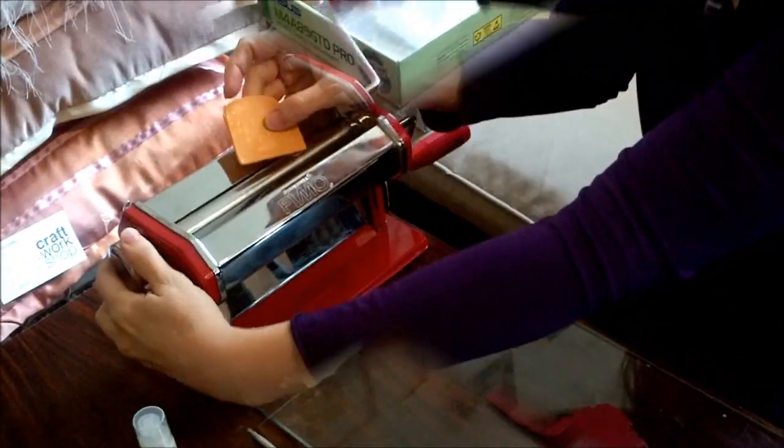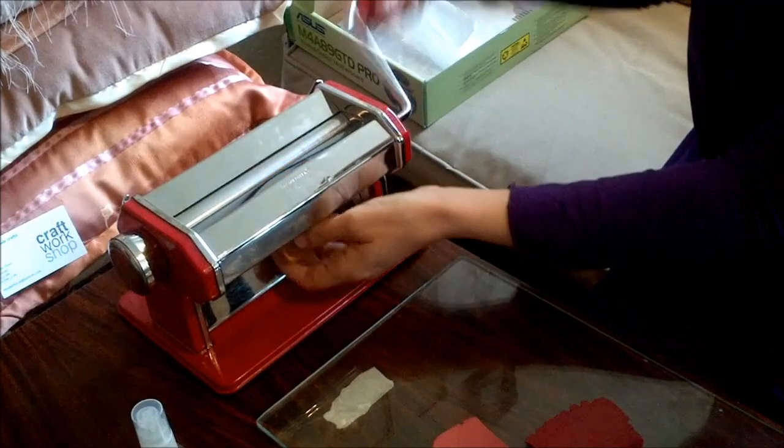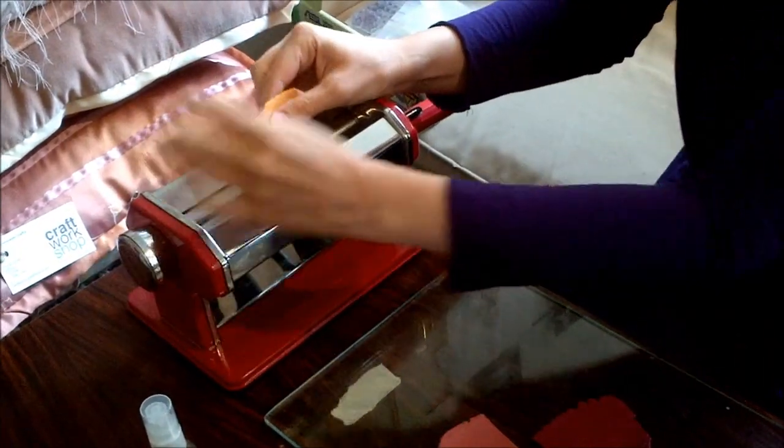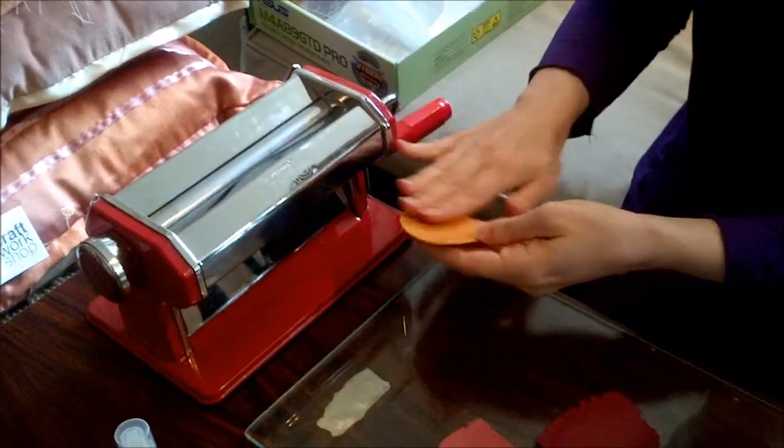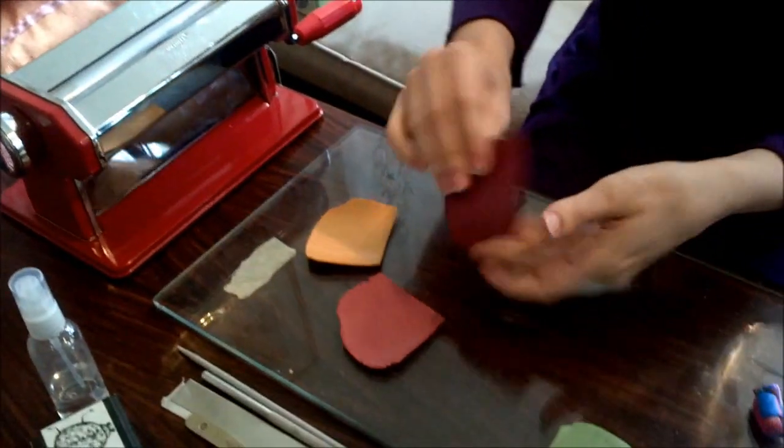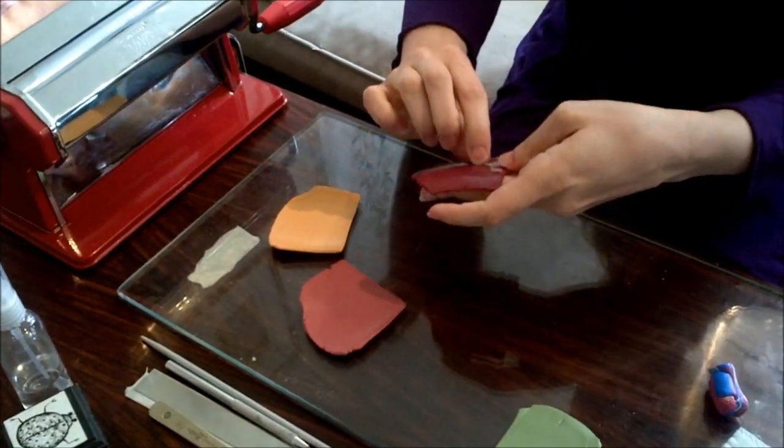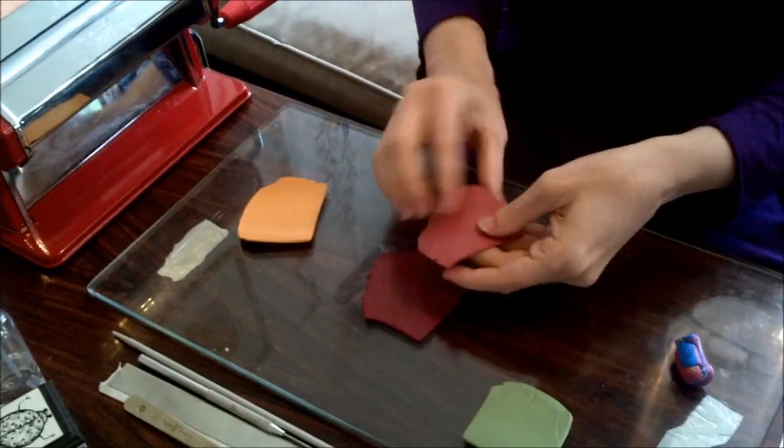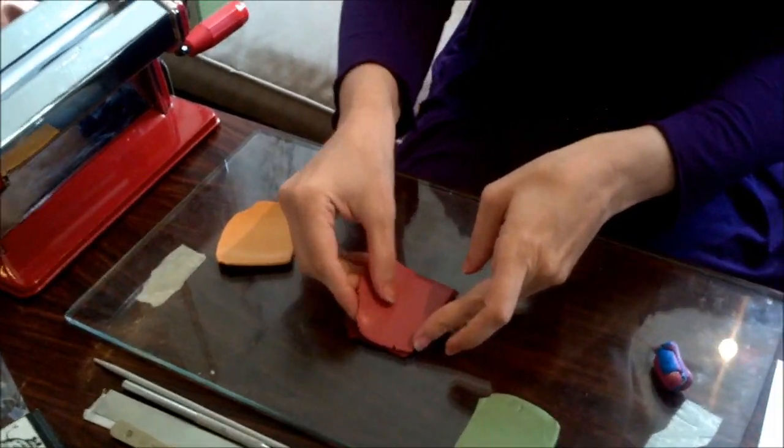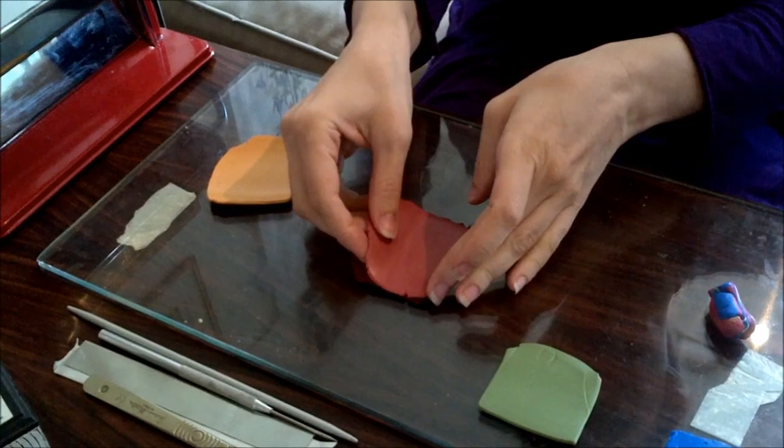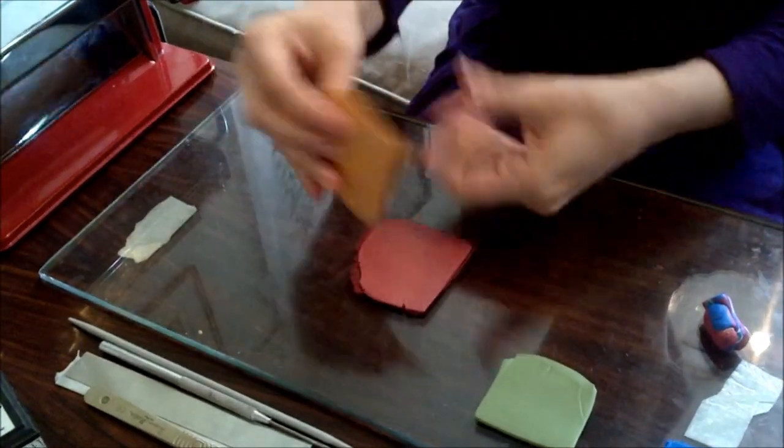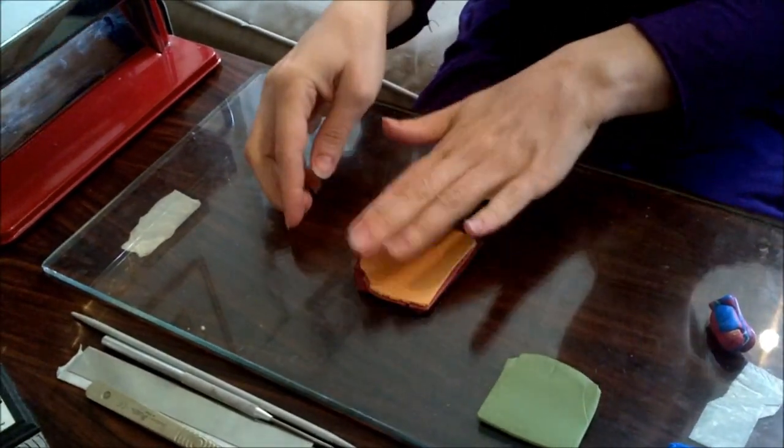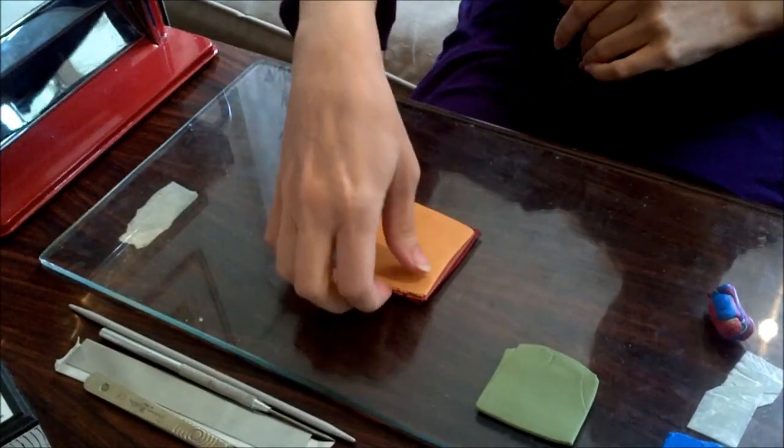So this is the pasta machine. It just helps get a nice even sheet of clay and also you use it to condition the clay. I'm just going to make a stack. So see what you want to have, look at the colors. So that's my three colors.